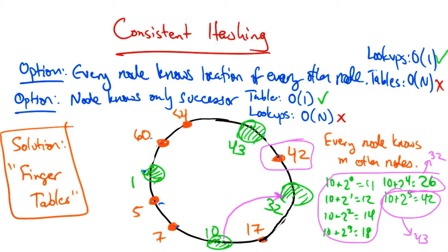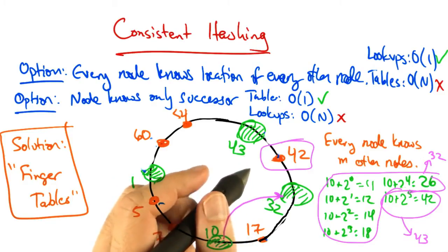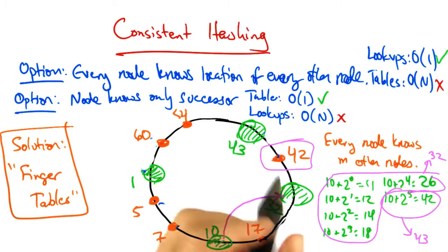At this point, we can move forward around the ring, looking for the node whose successor's ID is bigger than the ID of the data, which in this case is node 43.